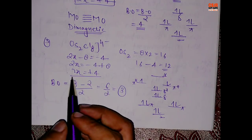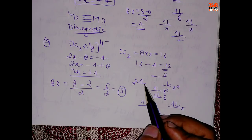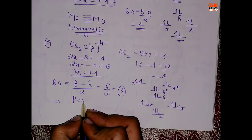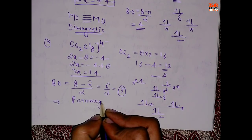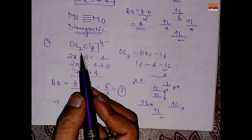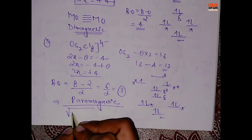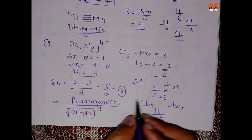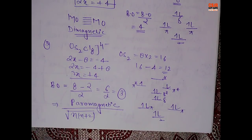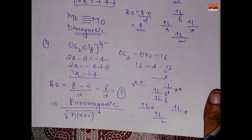That means this compound does not have a delta bond. Also, if you look closely there are unpaired electrons, meaning it is paramagnetic. If an examiner asks to calculate paramagnetism using the spin-only formula, it will be √(n(n+2)), where n is the number of unpaired electrons, which is 2. These types of questions can come in examinations.